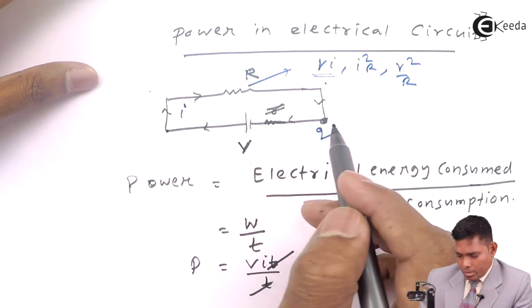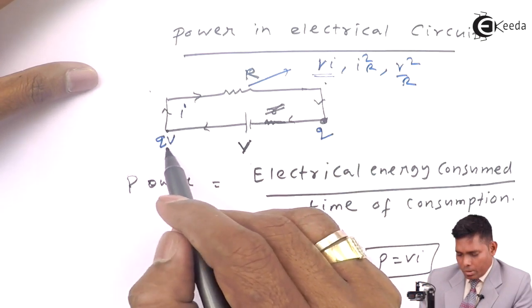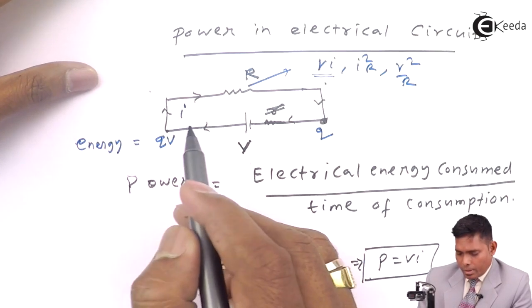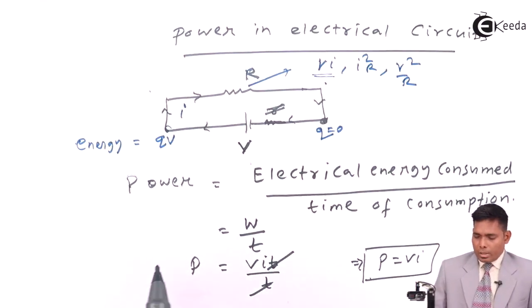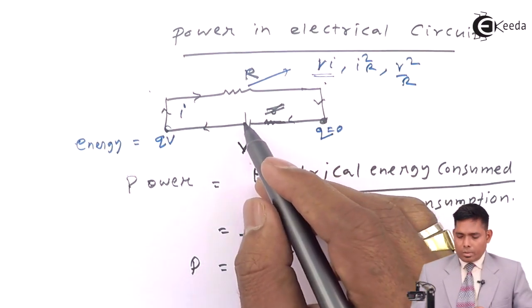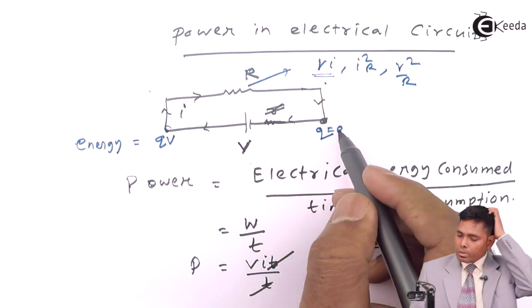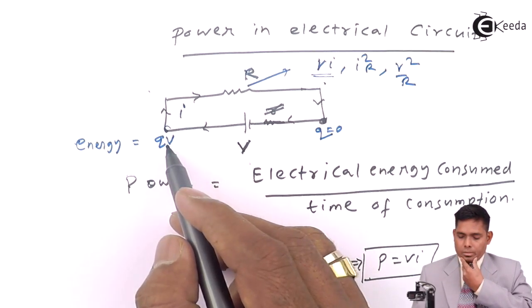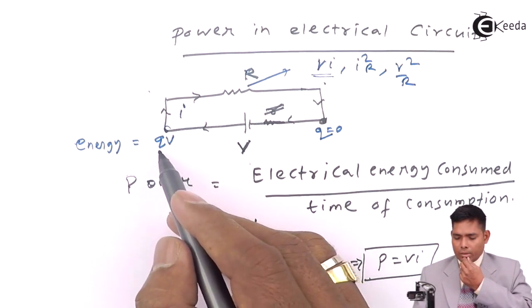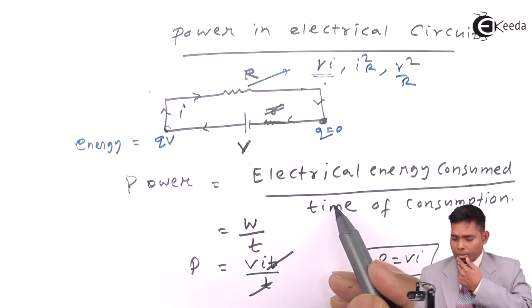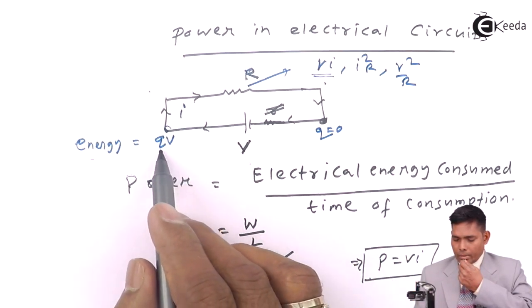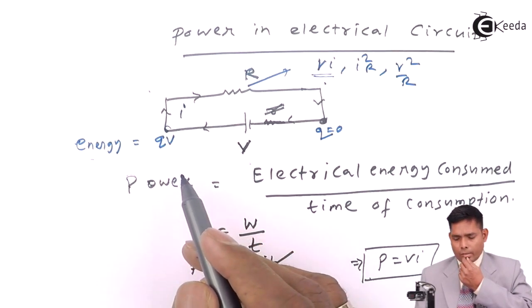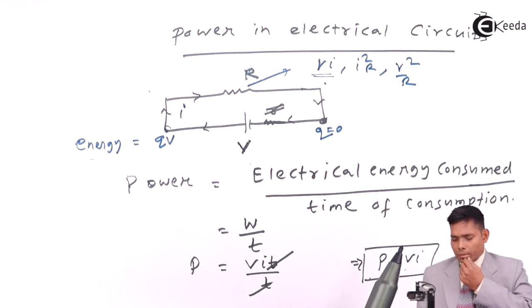Because Q charge flows here, and here will be QV—this is the energy that is available to this charge when it is here. But when it is here this energy is zero. The battery provides the energy to this charge, so it will be QV here. The time rate of flow of this energy is the power. So if I divide by time here, then Q by T—Q by T is I—that will be VI.